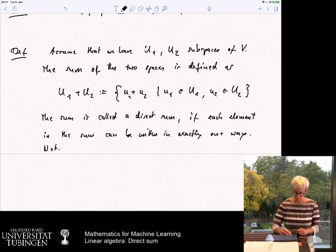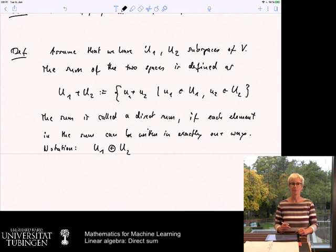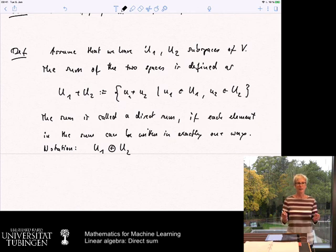The notation, if this happens, is then we write u1 plus with a little circle around it u2. And this means, so by the circle around the plus, we indicate the direct sum.